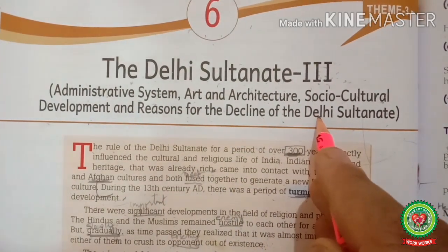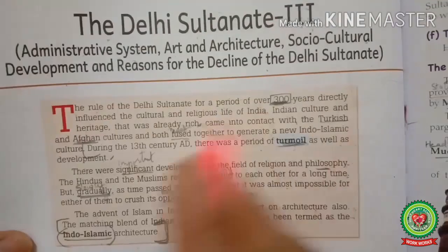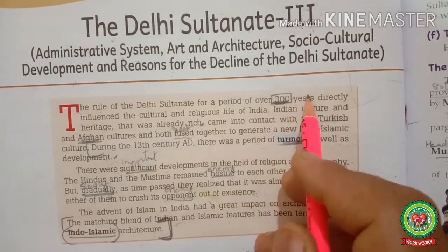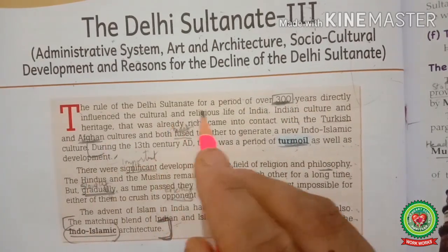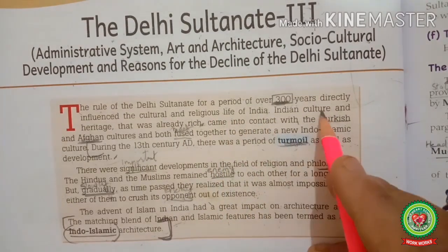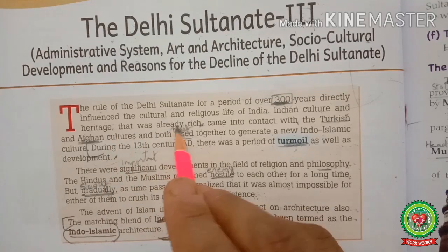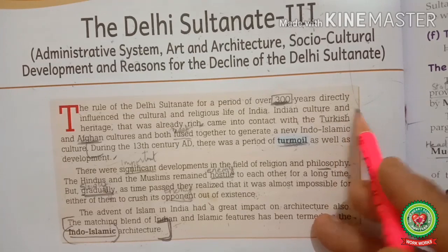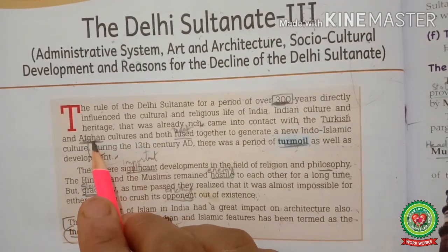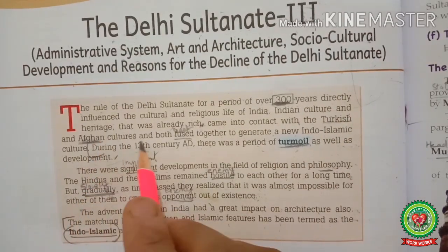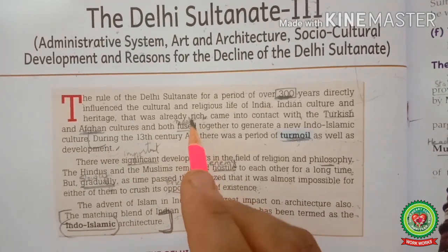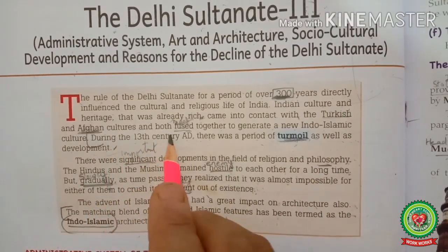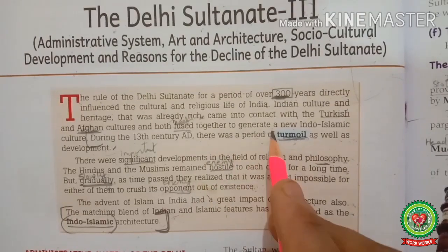Life under the sultanate period: the rule of the Delhi Sultanate for a period of over three hundred years directly influenced the culture and religious life of India. Indian culture and heritage, which was already rich, came into contact with the Turkish people of Turkey and Afghan cultures — Afghan meaning people of Afghanistan — and both fused together to generate a new Indo-Islamic culture. During the 13th century AD there was a period of turmoil.